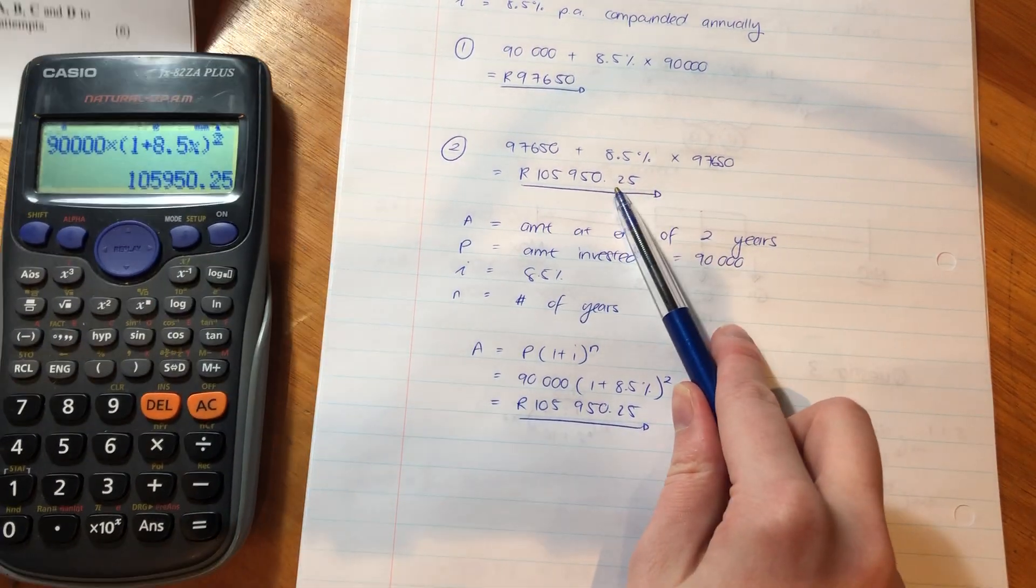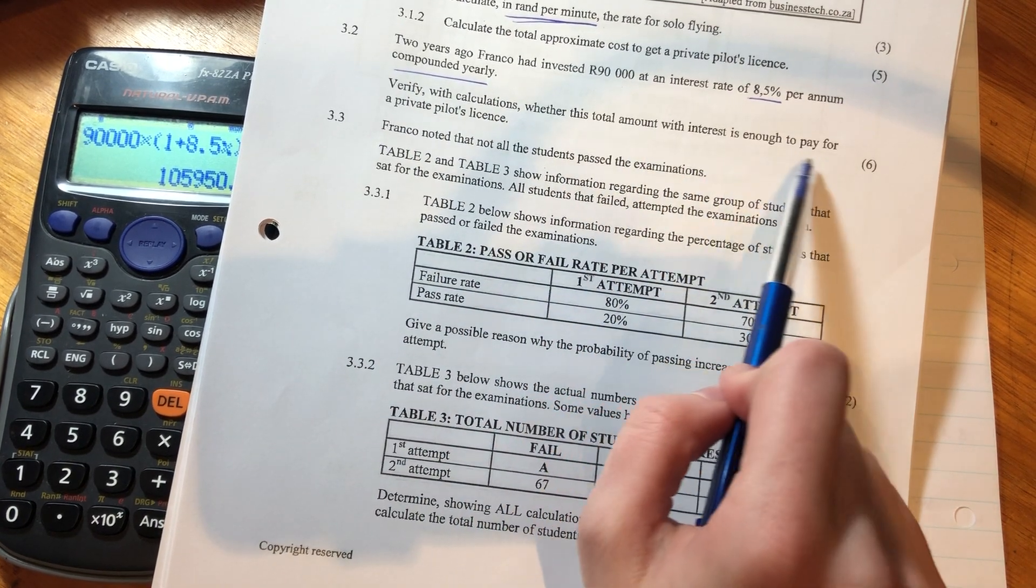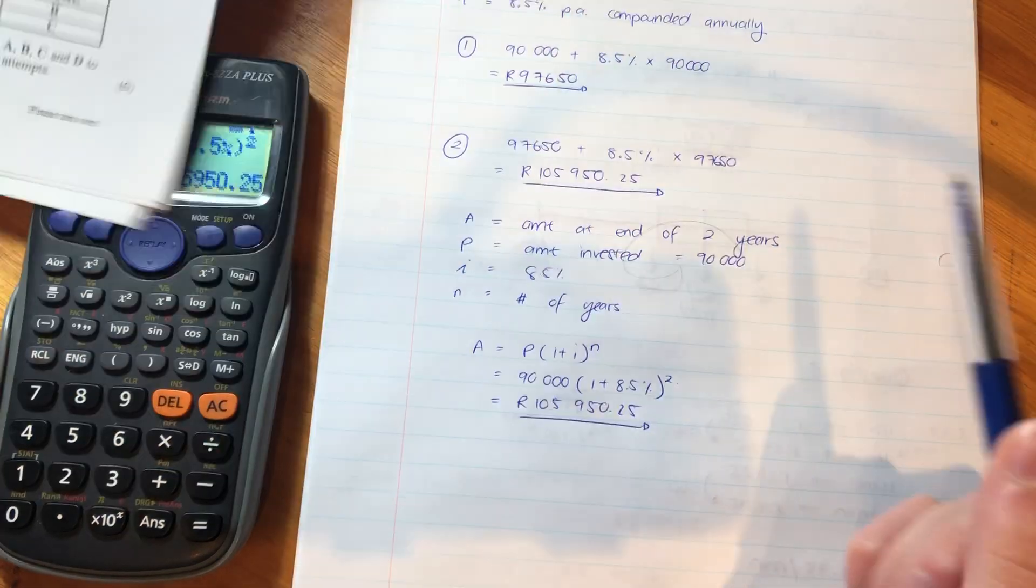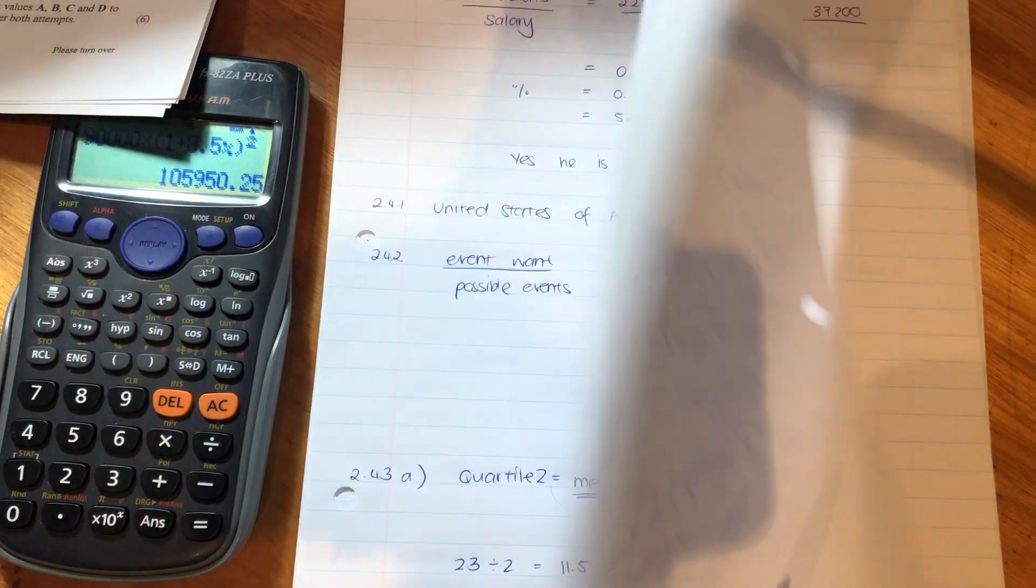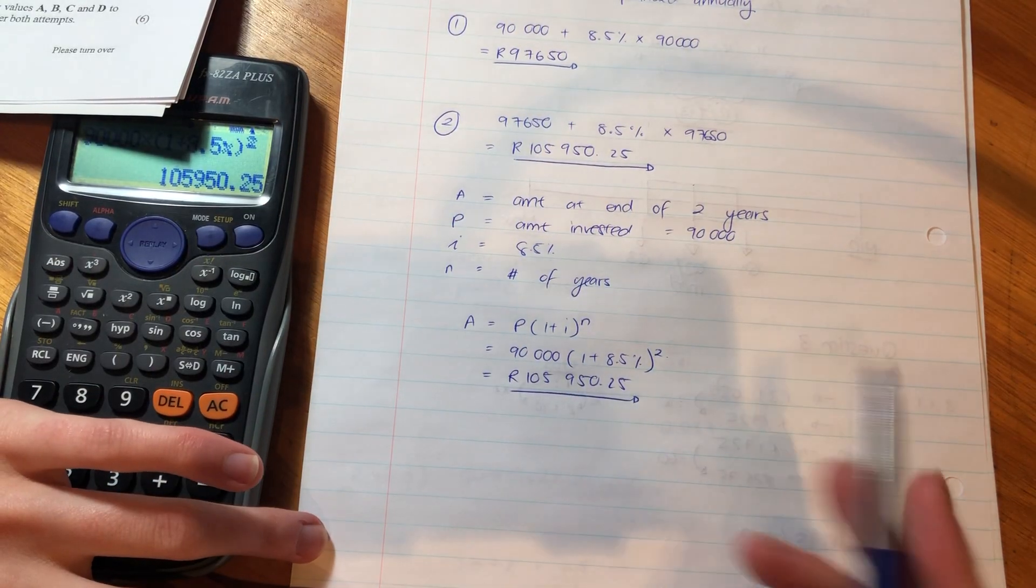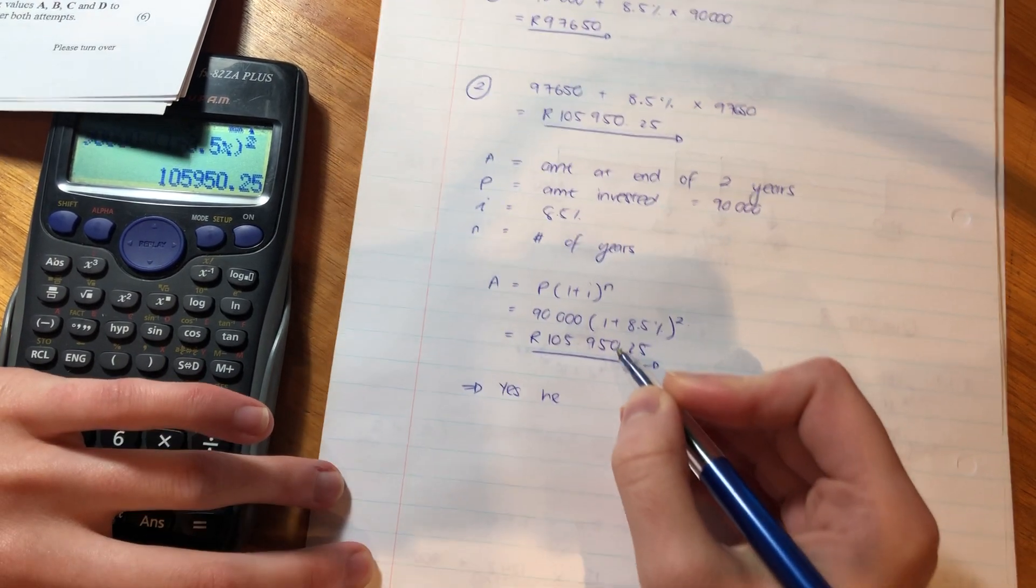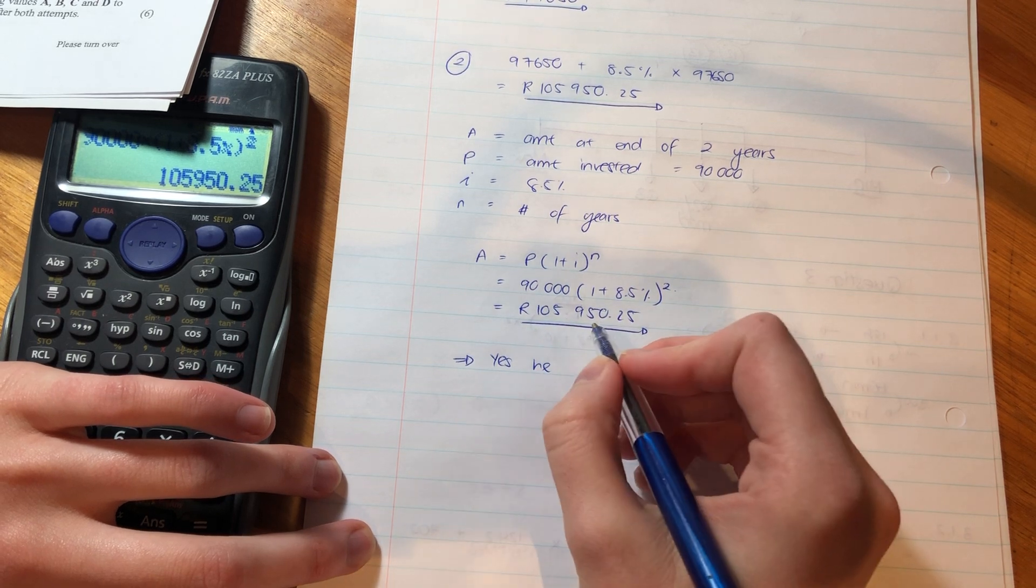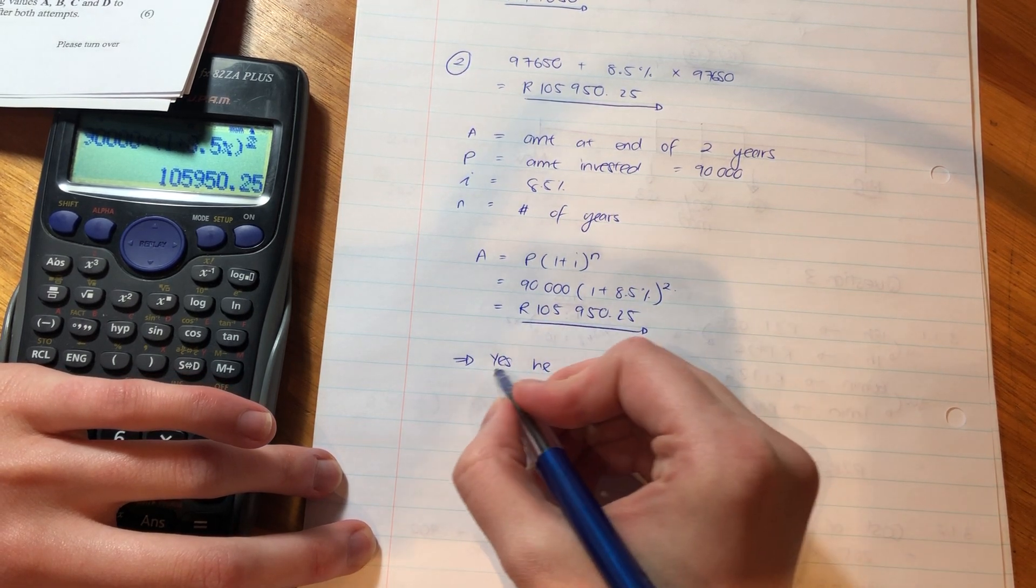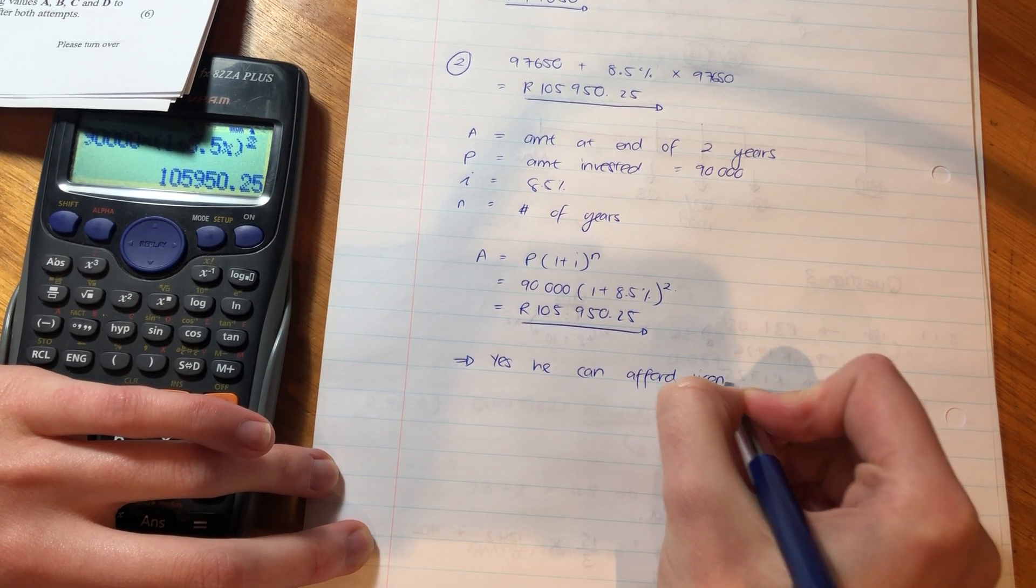But we haven't finished actually answering the question. The question says, does he have enough to pay for his license? So, we saw in the previous question that he needed this much, 103,234. And he has 105,950. So, conclusion, yes, sorry, I'm writing so hard here, I'm making this whole desk shake. Yes, he can afford license.